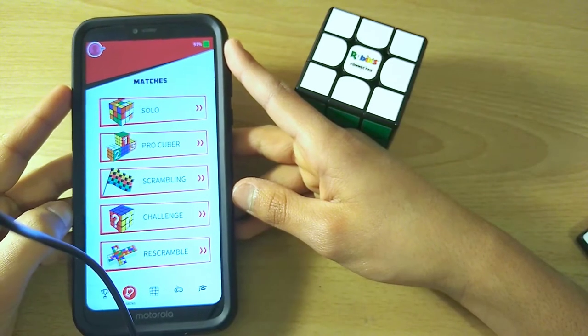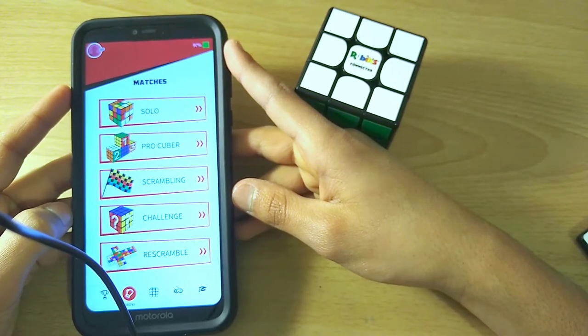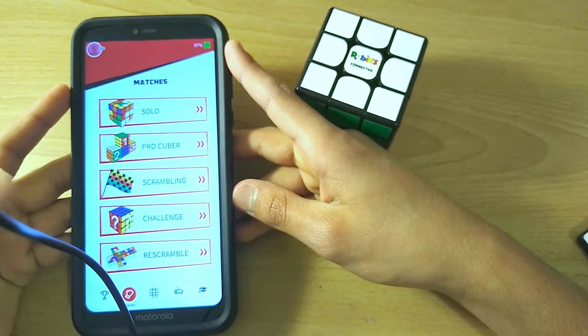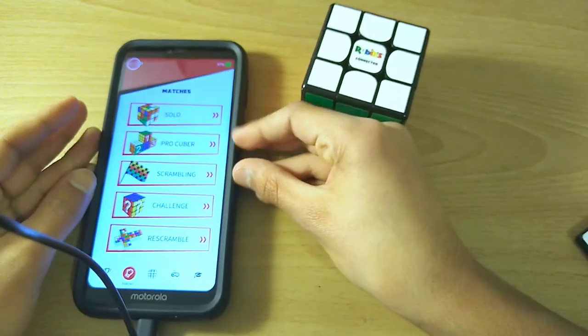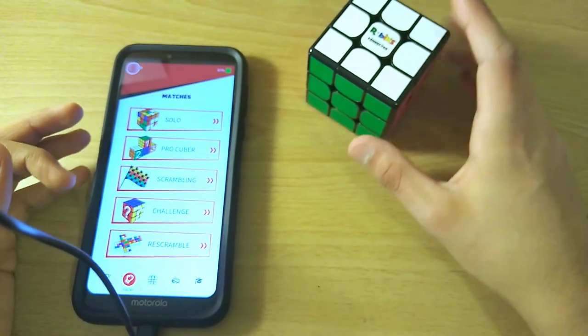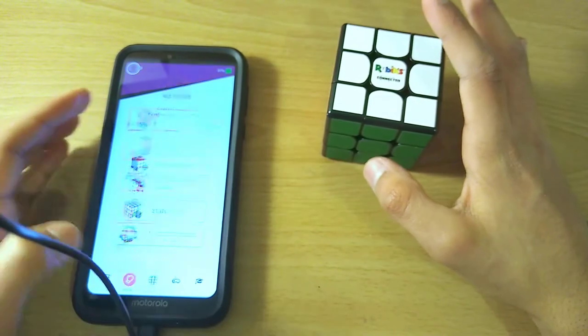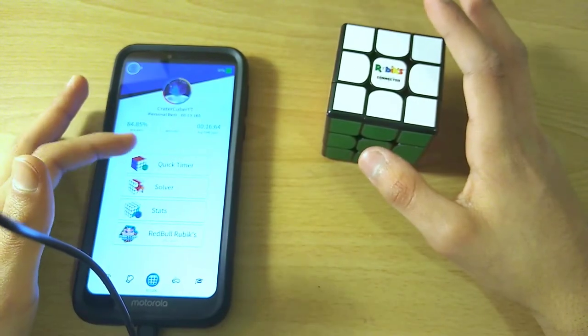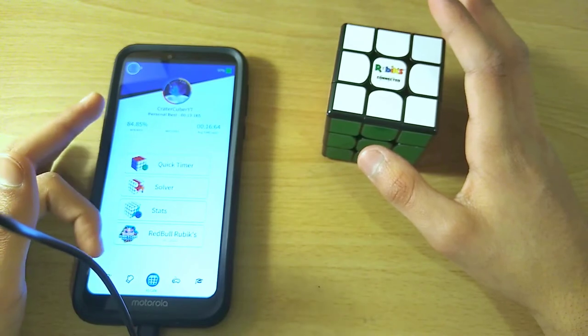Then there's like a challenge, which I believe is like it'll show you a face, and then you have to replicate that face. And then re-scramble is where it'll give you a random state, and you have to turn the cube into that state. Over here you have quick timer, solver, stats, and red bull.